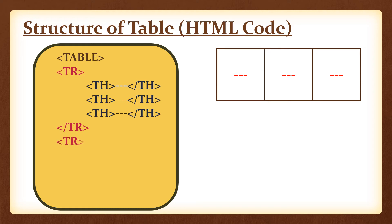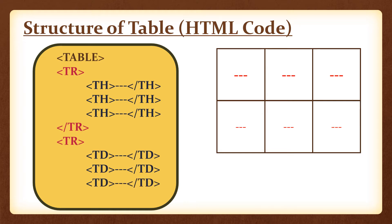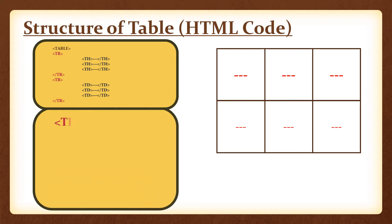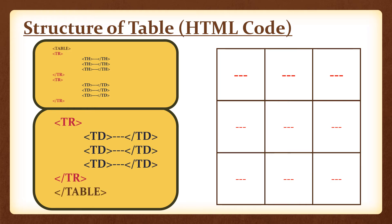Now start the second row with the opening tr tag. Define the next values using td. The td tag is used to define normal cell values — they will not be bold. Define the first, second, and third values for the second row, then close the tr tag. You can continue adding as many rows as you want in the same manner, defining each row with tr and each cell with td. When you are finished with the table, close the table tag.